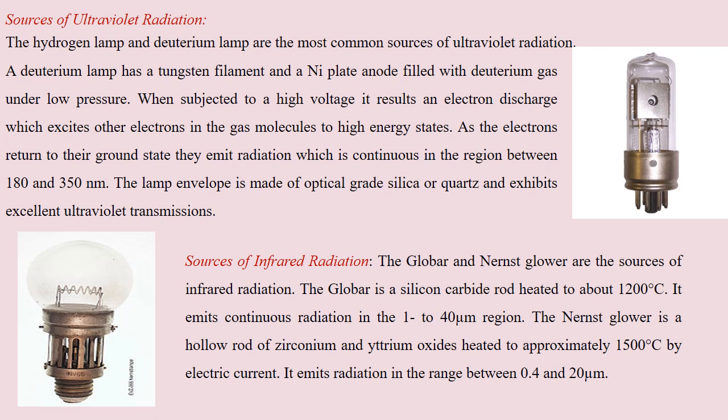For ultraviolet light radiation, hydrogen lamps or deuterium lamps are generally used. These involve a tungsten filament, a nickel plate which acts as an anode, and deuterium gas filled at low pressure in an evacuated bulb. When a high voltage is applied to the anode and filament, it excites the electrons in the gas molecule to a higher energy state, and these electrons then return to the ground state by emitting continuous radiation with wavelength 180 to 350 nanometers.